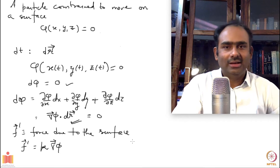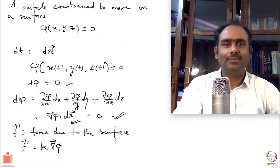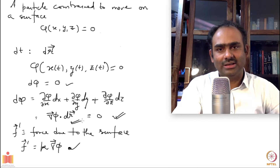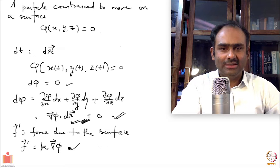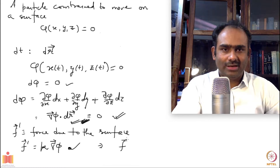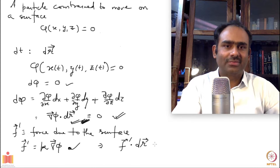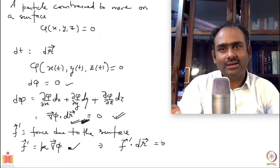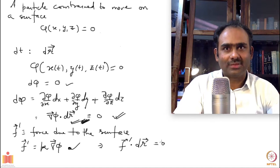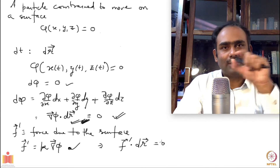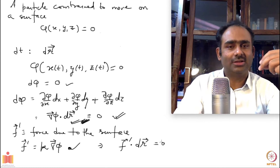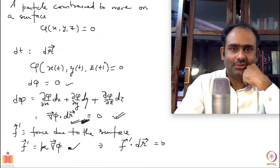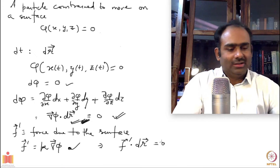From here we can immediately see something about the nature of the force of constraint. If we substitute f' = k∇φ into the relation ∇φ · dr = 0, we immediately see that f' · dr = 0. This is the work done by the force of constraint in moving the particle by amount dr, and we see that work turns out to be 0.